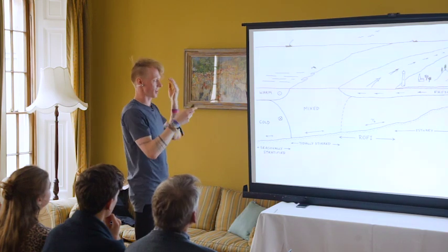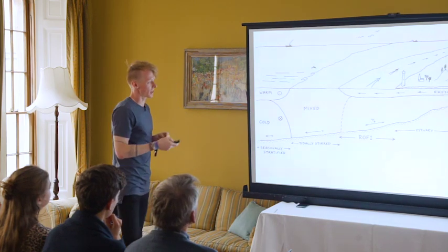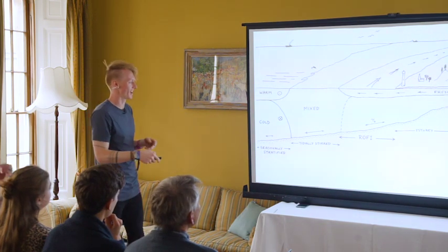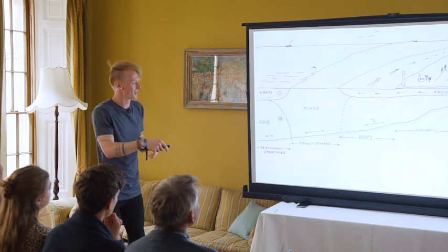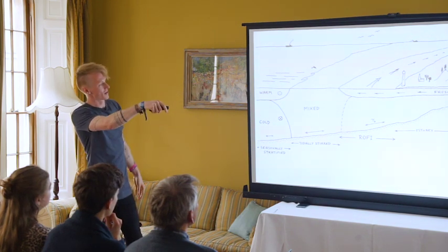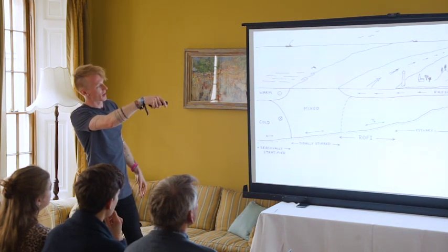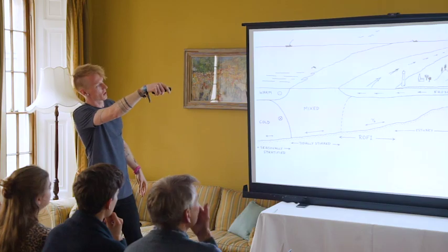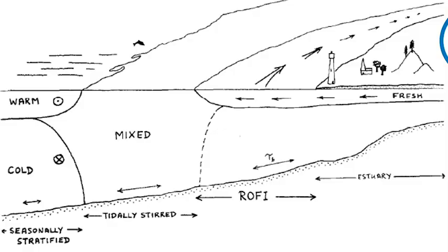Let's look at this more closely. Here's a little schematic of a river flowing in. We know that it turns and flows along the coast — in the Northern Hemisphere it goes to the right, in the Southern Hemisphere to the left, due to the switch in the Coriolis force.